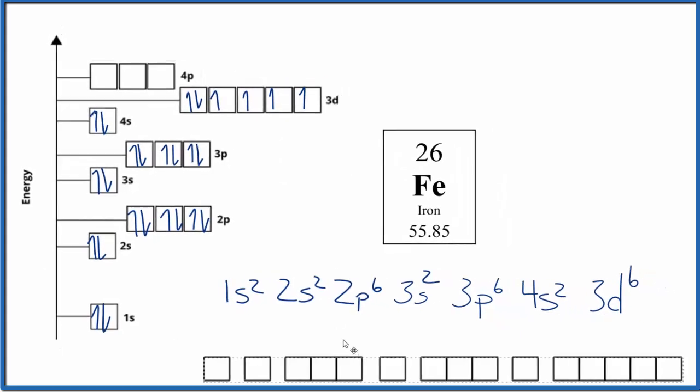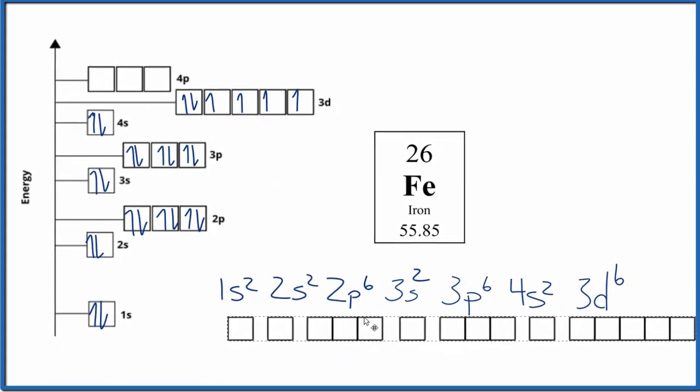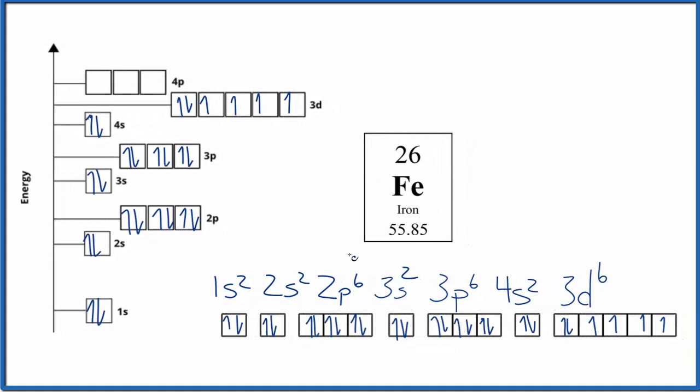Sometimes you'll also see this written in a more horizontal fashion like this. It's the same thing, just horizontal. In all of these, we're just trying to show where these electrons are around the nucleus of the iron atom.